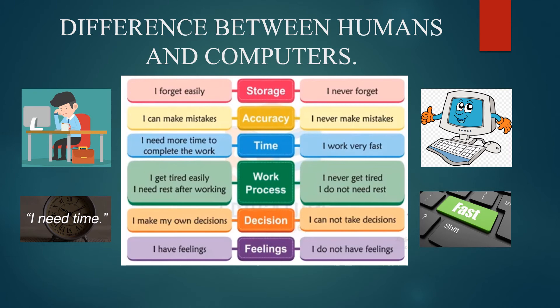If we type quickly on a computer, it is much faster than writing by hand. The fourth point is work process. The human says: I get tired easily and need rest after working. But the computer says: I never get tired, I don't need rest, and I can work for a long time without any issues.